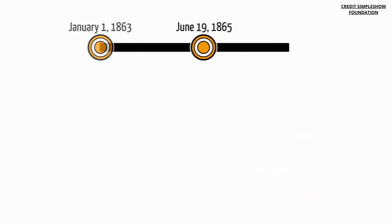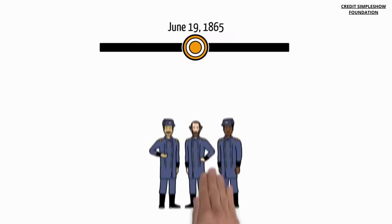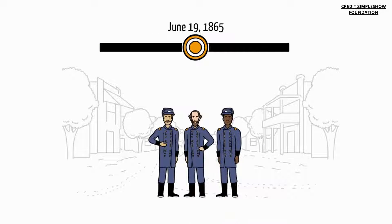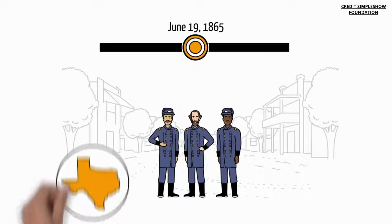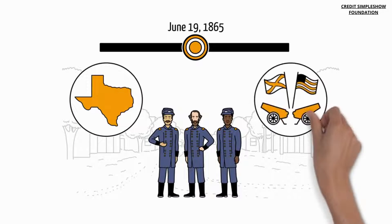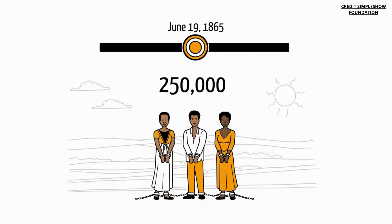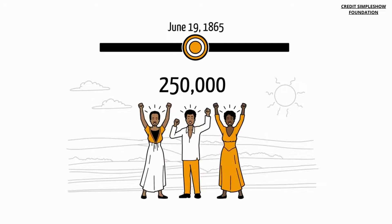Finally, on June 19th, 1865, Major General Gordon Granger arrived in Galveston, Texas, and announced that the Civil War had ended, and the more than 250,000 remaining enslaved people were now free, resulting in massive celebrations.